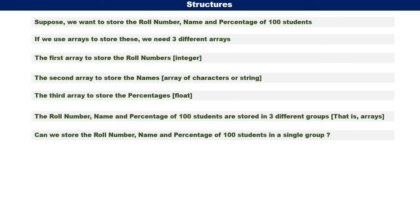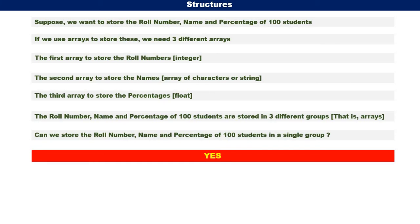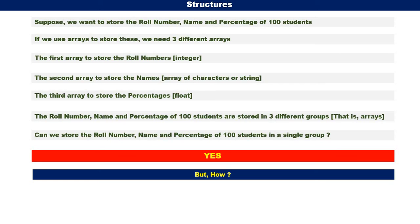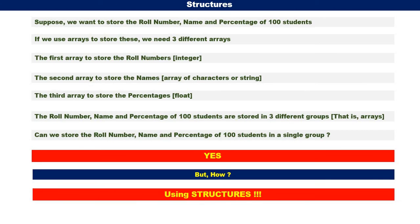Now, the question is: can we store the roll number, name, and percentage of 100 students in a single group? Yes, we can. But how? Using structures. Using structures, we can store the roll number, name, and percentage of 100 students as a single group. Let us see how.